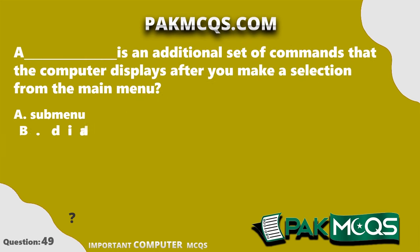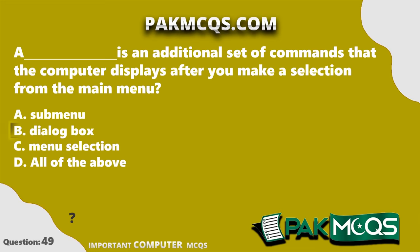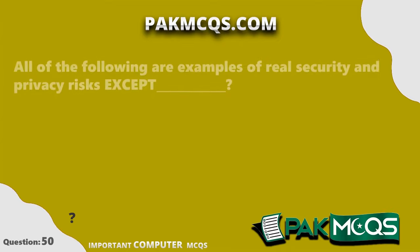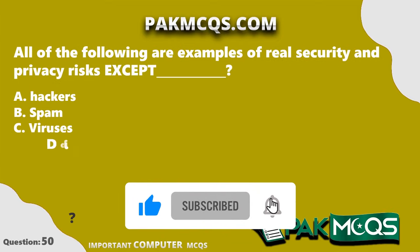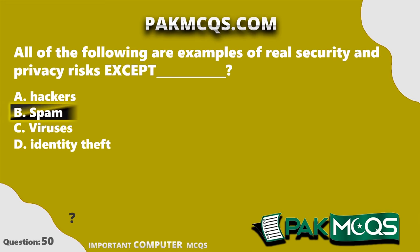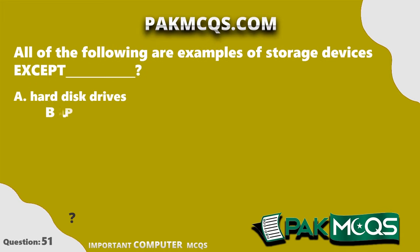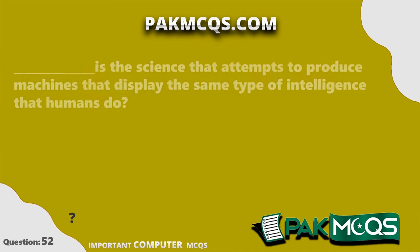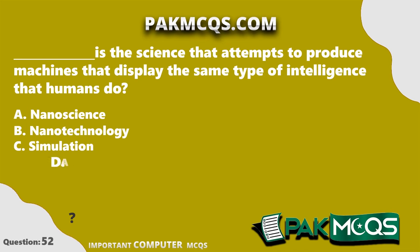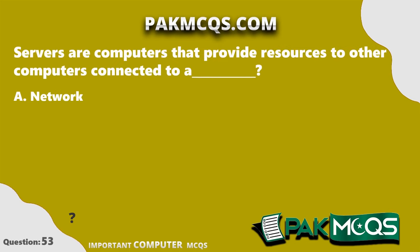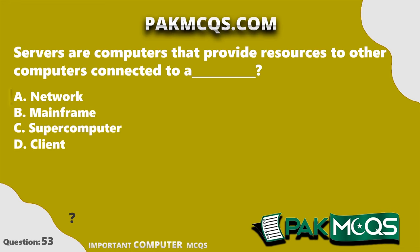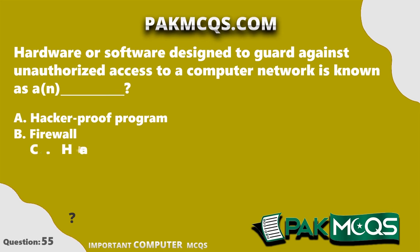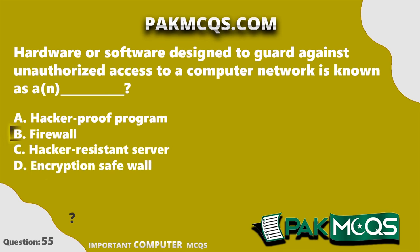A dialog box is an additional set of commands that the computer displays after you make a selection from the main menu. Spam is not a real security or privacy risk. Printers are not storage devices. Artificial Intelligence is the science that attempts to produce machines that display the same type of intelligence that humans do. Servers are computers that provide resources to other computers connected to a network. Hardware or software designed to guard against unauthorized access to a computer network is known as a firewall.